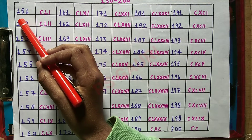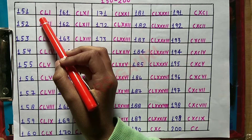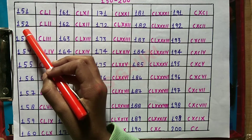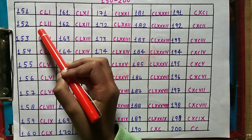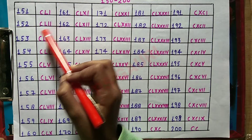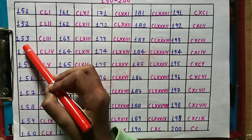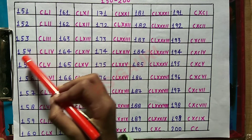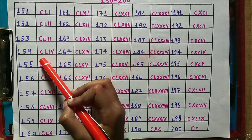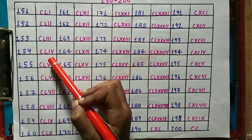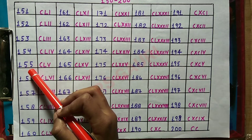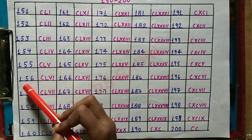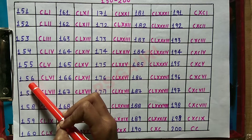Let's start. 151: CLI. 152: CLII. 153: CLIII. 154: CLIV. 155: CLV.